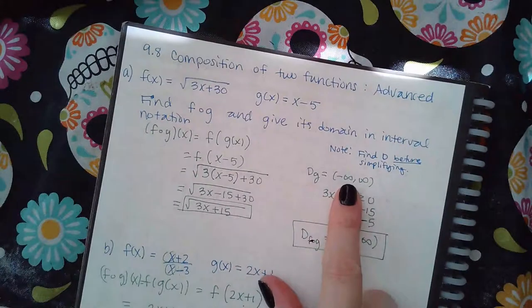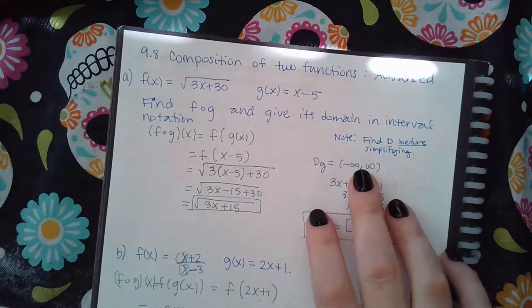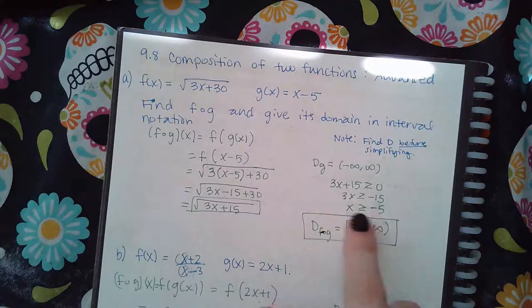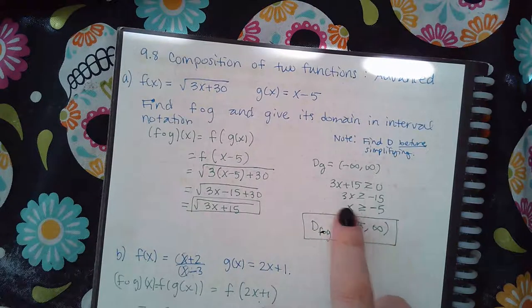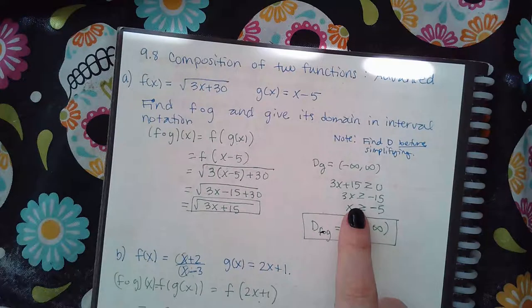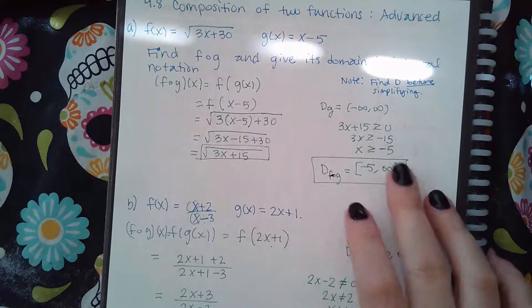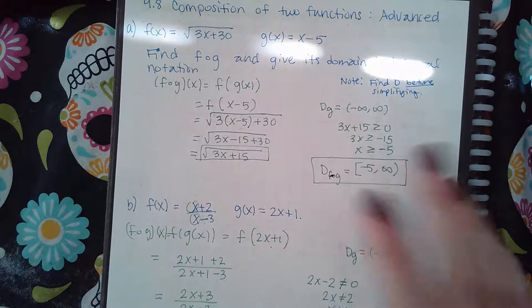Same thing with these. The inside function, this was my potential domain. But because this f of g was a little bit different, I had to exclude some of the values. So anything that would have made the inside negative had to be removed from this potential domain. And I did that. Anything that was less than negative five would have been bad.